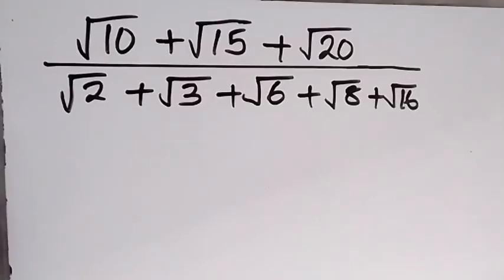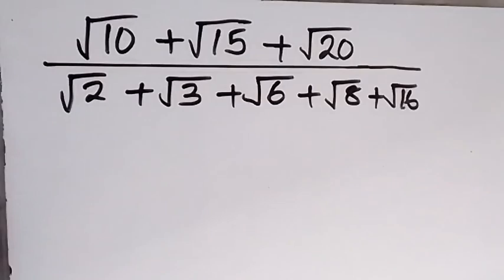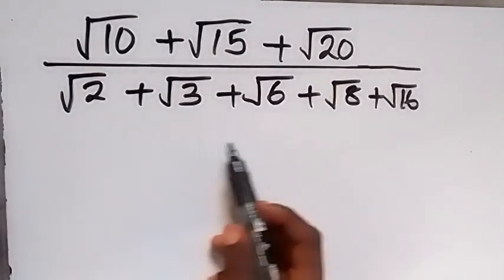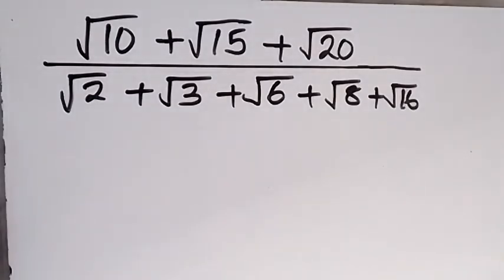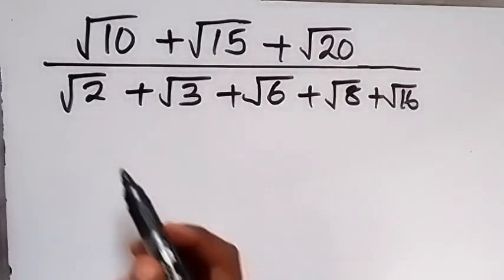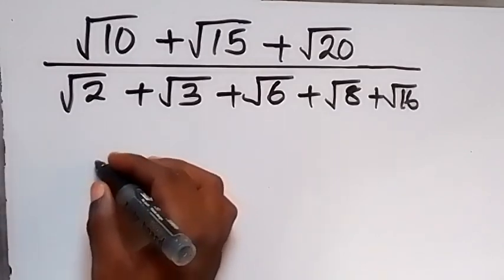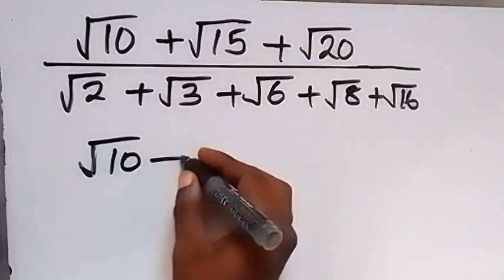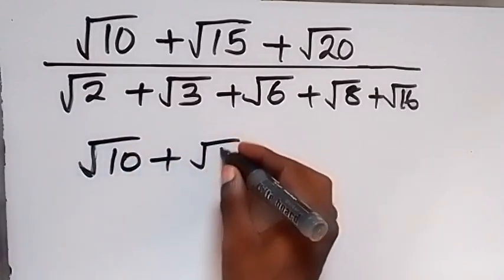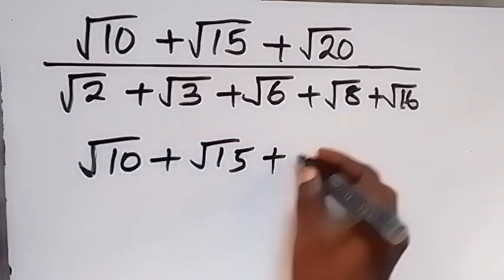Hello, you are welcome. How to solve this problem: root 10 plus root 15 plus root 20, all divided by root 2 plus root 3 plus root 6 plus root 8 plus root 16. Let's evaluate the numerator first. From the numerator we have root 10 plus root 15 plus root 20.